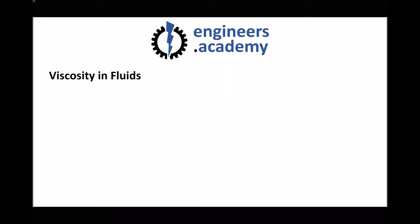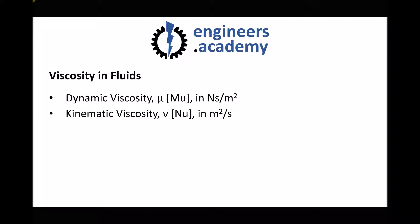There are two different types of viscosity that we need to be aware of. The first is called dynamic viscosity, given the Greek letter mu, and it's measured in newton seconds per meter squared. The other type is kinematic viscosity, also given the Greek letter nu, and it's measured in meters squared per second.